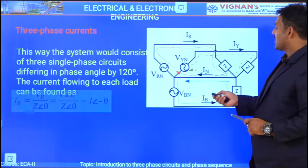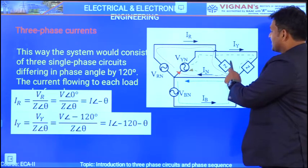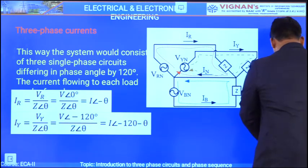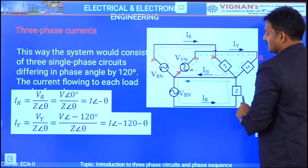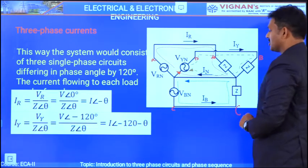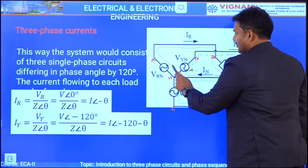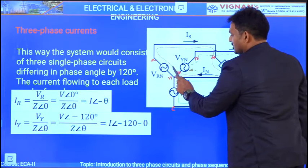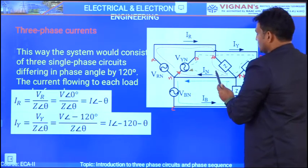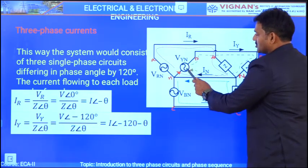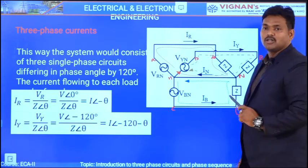For three-phase currents, assume a balanced star-connected load Z connected to the three-phase sources. Point A of the source connects to phase A of the load, point B to node B, and point C to node C, with all common points joined together. The current I_R flows through the loop from V_RN through the load and returns via the common point. Similarly, I_Y flows through V_YN and I_B flows through V_BN back to the common neutral point.